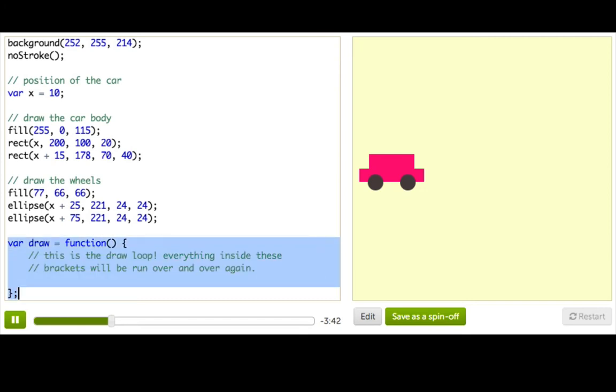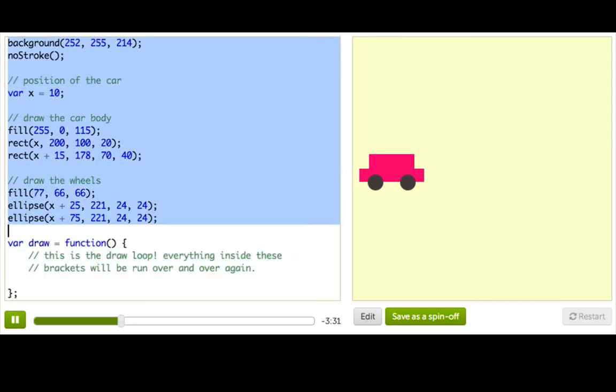This whole thing is what we call the draw loop, or the animation loop. And everything that you put inside these brackets gets run over and over again really, really fast. That's why it's called a loop. And then everything outside these brackets gets run only once at the very beginning of the program.